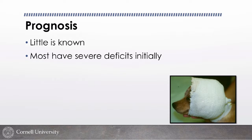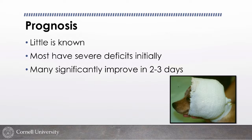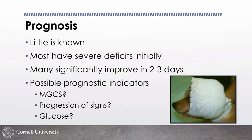Prognosis for head trauma: we don't have good published veterinary data, and most will have severe deficits initially. In my experience, most improve significantly if you give them a few days. I tell owners: even if we can't do MRI or surgery, give it a couple of days — many get much better quickly. If not, we can always stop. It's amazing how well they do even when they start out looking awful. Possible prognostic indicators: mGCS progression, and hyperglycemia — associated with worse outcome, though the relationship isn't fully understood.